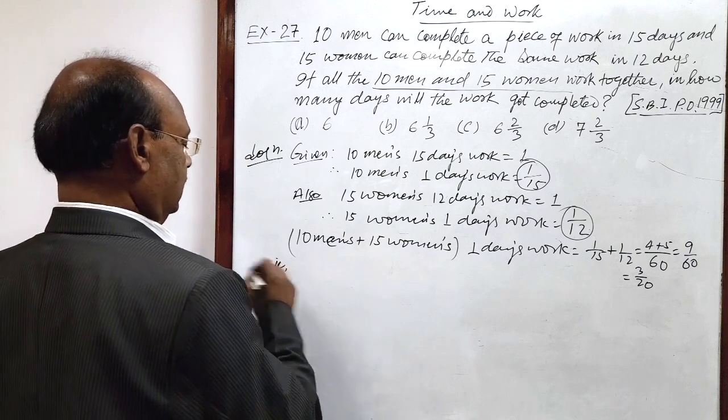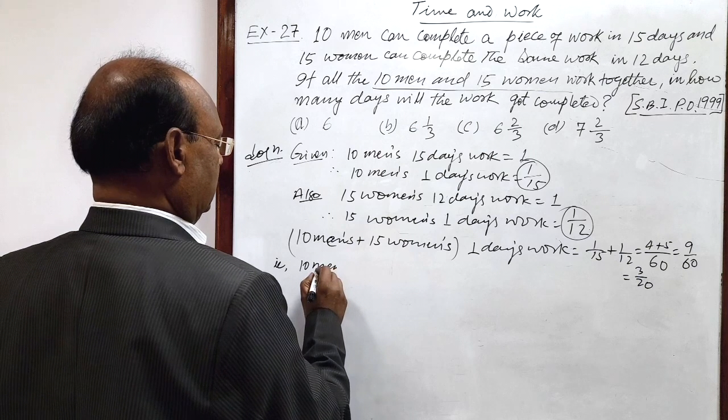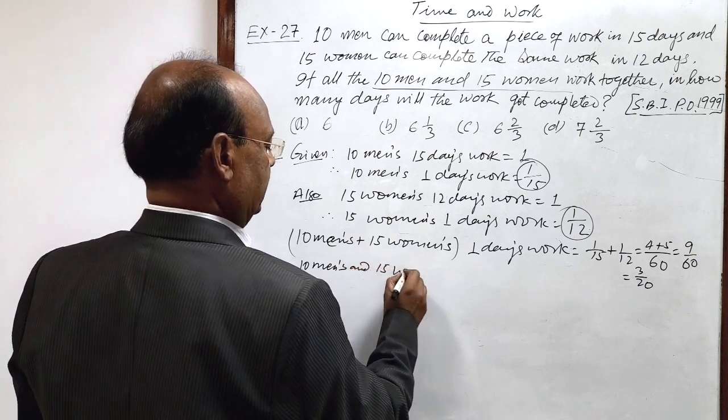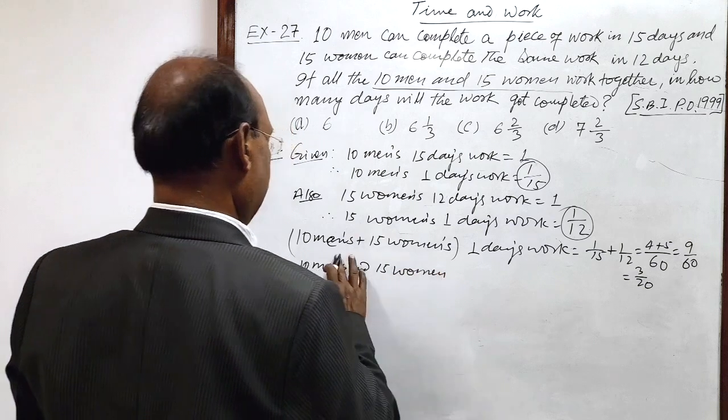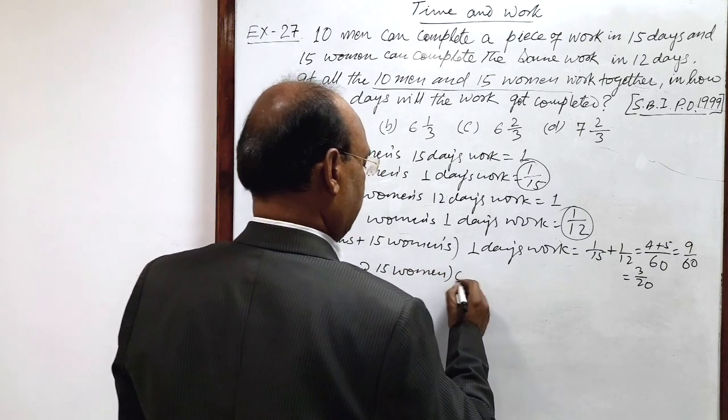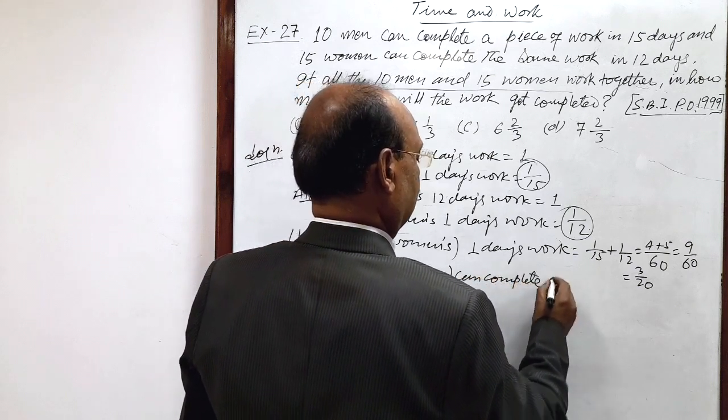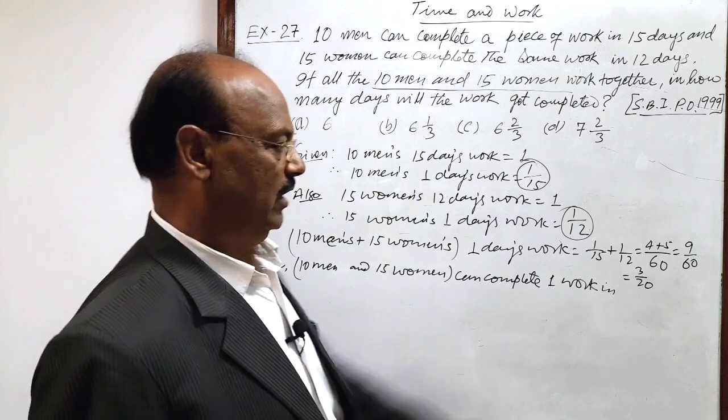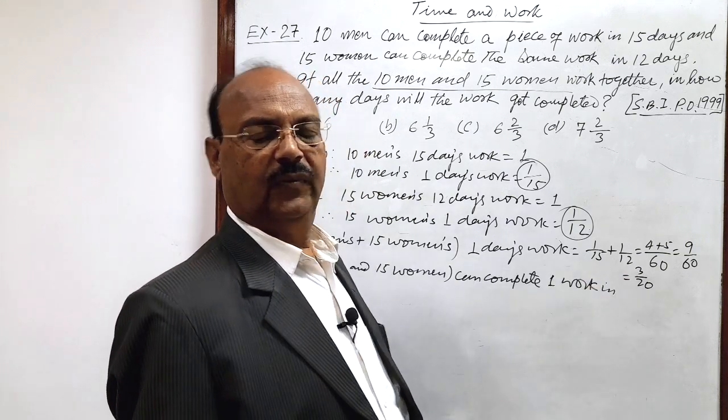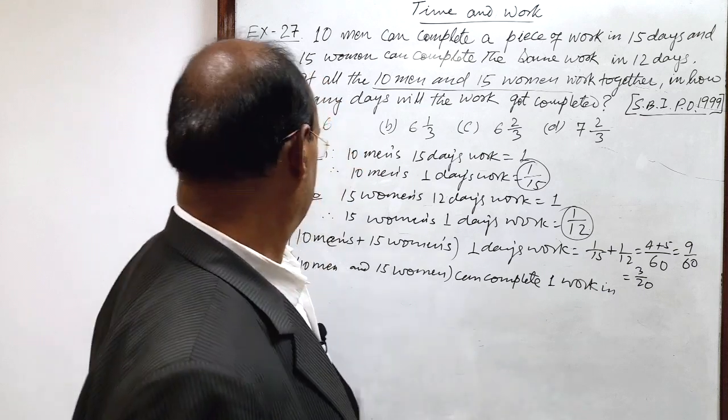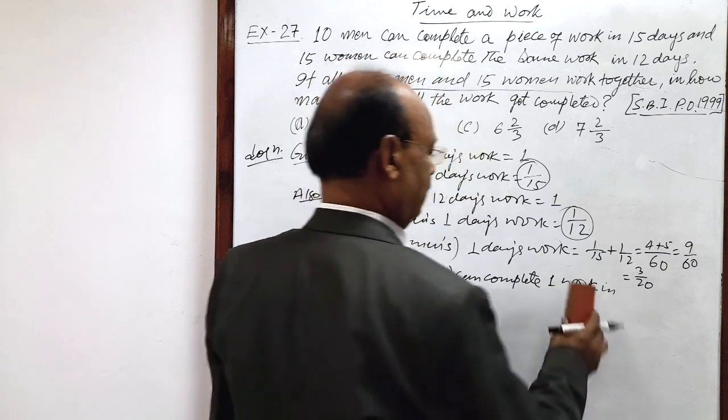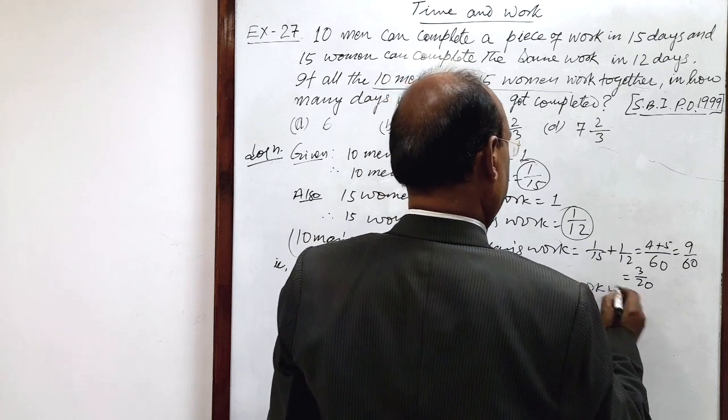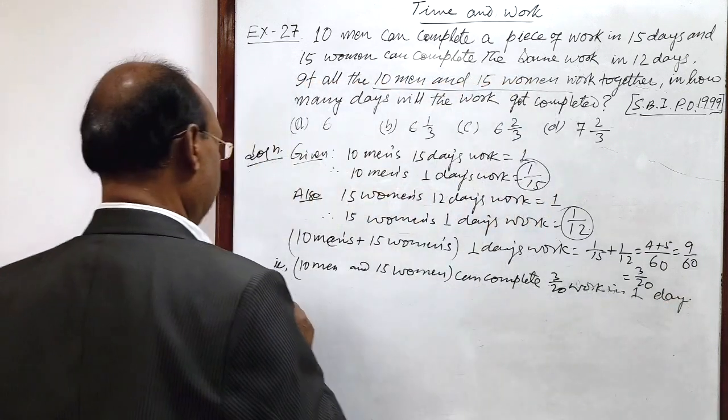That is, 10 men and 15 women can complete 1 work in how many days? 1 upon 3 by 20. Why? By unitary method we will get, or let us write one more step. They complete 3 by 20 work in 1 day. So by unitary method, therefore, 10 men and 15 women...